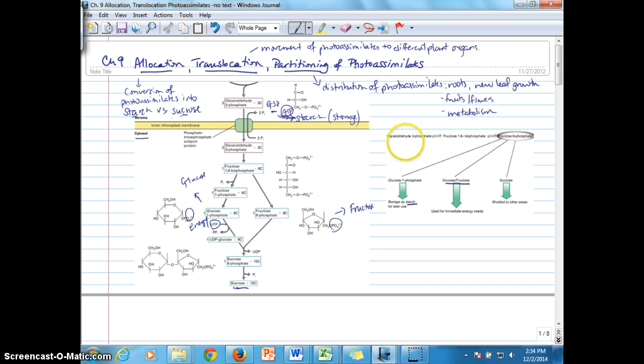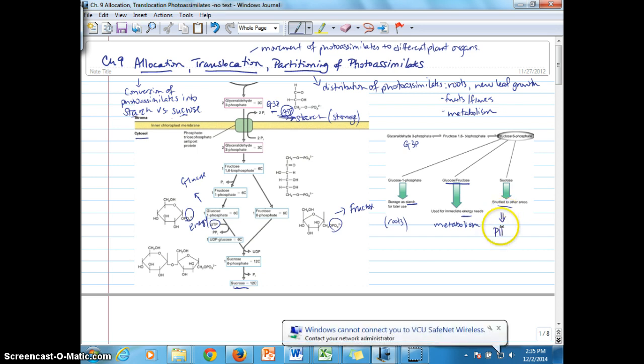So over here, we again see where G3P can possibly be converted to starch for storage. And this might happen in the roots, as an example. It can also happen in stems or in leaves. It may be that glucose or fructose is the photo-assimilate that's produced, and this is useful for energy needs or metabolism. And finally, sucrose, which is then shuttled to other areas, which means that it is transported in phloem.